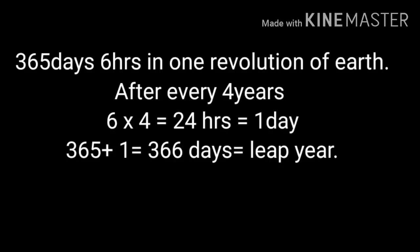But for the convenience of calculation, we take 365 days, forgetting those extra 6 hours. After 4 years, those 6 hours add up — 6 hours into 4 equals 24 hours, meaning one day. So that one day is added to 365, making 366 days, and that is called a leap year. In a leap year, in the month of February, instead of 28 days, there are 29 days. So how many days are in a leap year? 366 days.